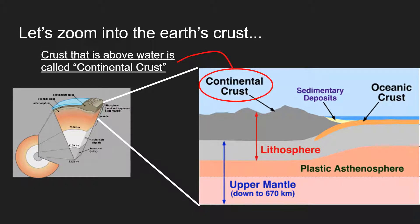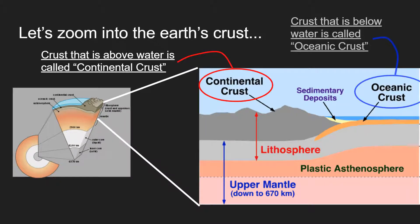The terms I want you to know are these: the first is continental crust — that's crust above the water, above the ocean. You and I live on continental crust; it's called continental because that's what the continents are made of. Then there's oceanic crust, which is any crust below the ocean. There's still crust down there underwater — you and I just can't see it unless we dive down and look at it.